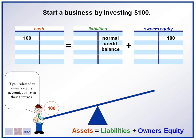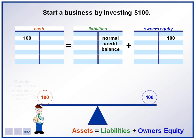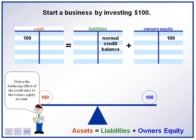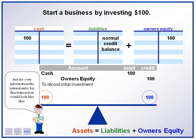Since we gave $100 in cash to the business, we will have $100 in owner's equity to represent that. When we credit owner's equity, this will bring our accounting equation back into line. Now we have a balanced accounting equation. The journal entry for this transaction would be to debit cash for $100 and credit owner's equity for $100. We also write a memo to remind us of what the transaction is for.